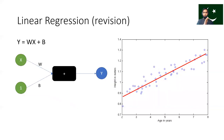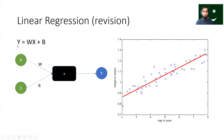Now let us revise some linear regression, because logistic regression is related to it. If you remember, we had a problem solving linear regression where we took height as input and tried to predict height. The equation we used was y equals wx plus b. In machine learning, we call w the weight, which represents the slope.